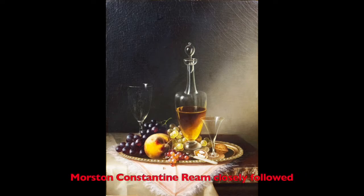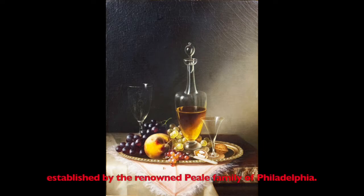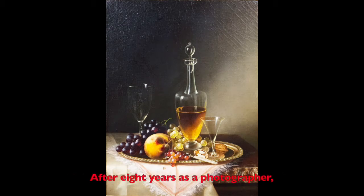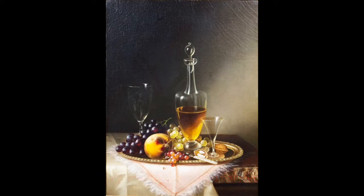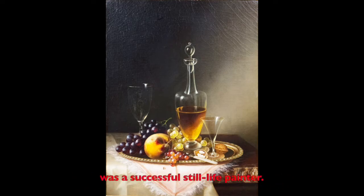Morstan Constantine Rien closely followed the American still life tradition established by the renowned Peel family of Philadelphia. After eight years as a photographer, Rien traveled to New York City in 1868 to pursue a career as a painter. His older brother, Cardatius Plantagenet, was a successful still life painter.